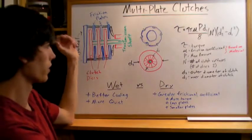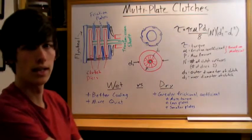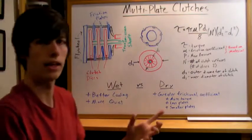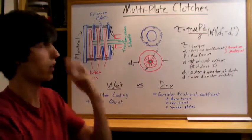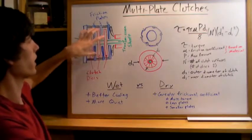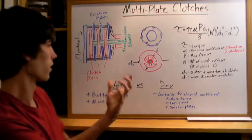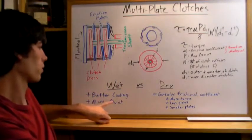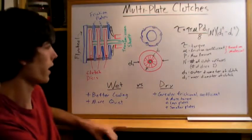Another thing you'll hear when talking about multi-plate clutches is wet versus dry. Wet means that you've got oil within the clutch housing, so you can have engine oil in here, and that's going to act as a coolant. So wet clutches are going to be better for cooling, and they're also going to be much more quiet.